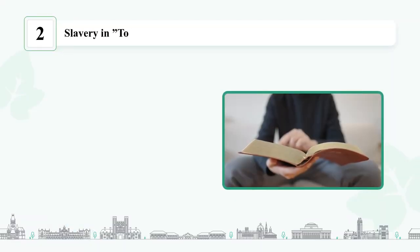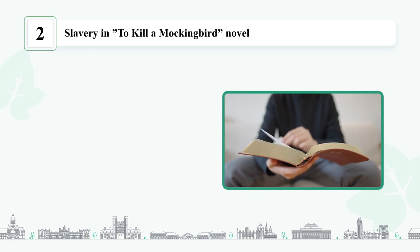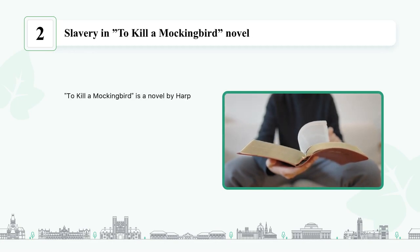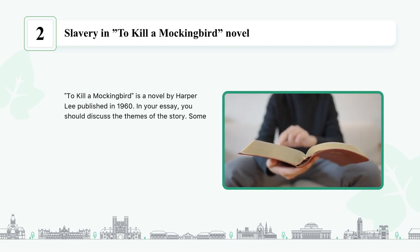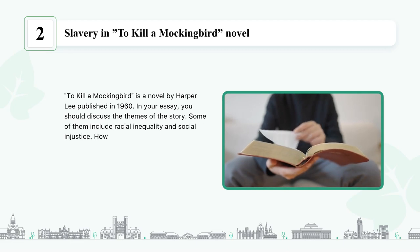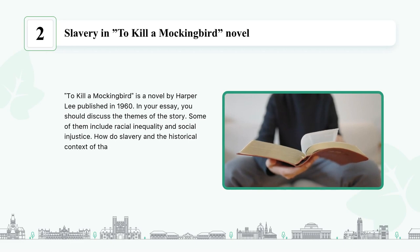Slavery in 'To Kill a Mockingbird' novel: 'To Kill a Mockingbird' is a novel by Harper Lee published in 1960. In your essay you should discuss the themes of the story, some of which include racial inequality and social injustice. How do slavery and the historical context of that time impact the narrative?